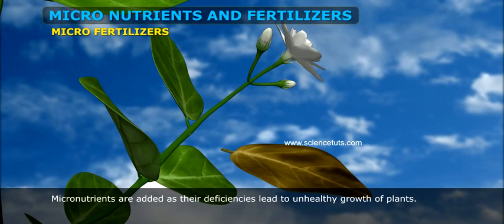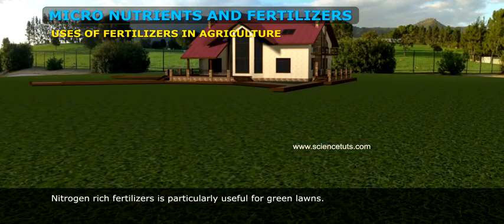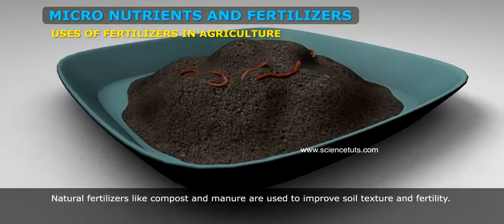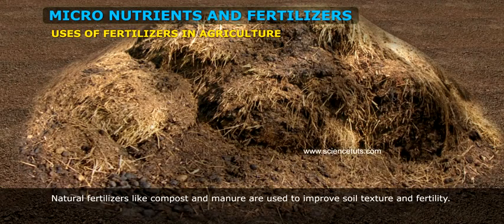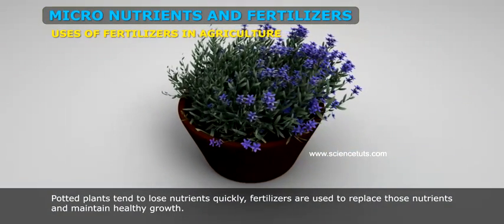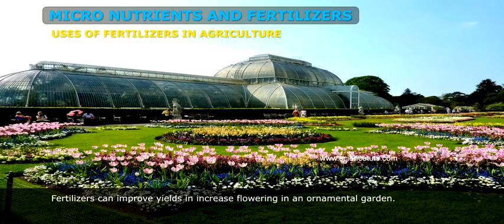Micronutrients are added as deficiencies lead to unhealthy growth of plants. Uses of fertilizers in agriculture: Nitrogen-rich fertilizers are particularly useful for green lawns. Natural fertilizers like compost and manure are used to improve soil texture and fertility. Potted plants tend to lose nutrients quickly, so fertilizers are used to replace those nutrients and maintain healthy growth. Fertilizers can also improve yields and increase flowering in ornamental gardens.